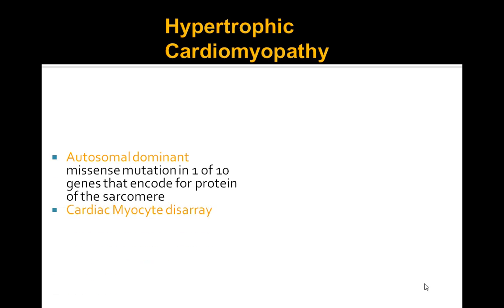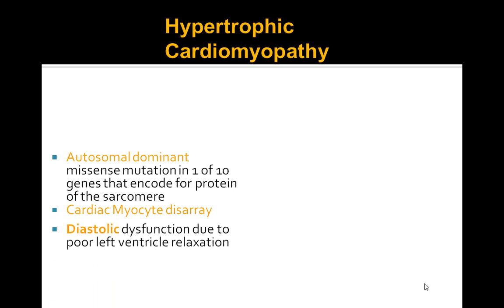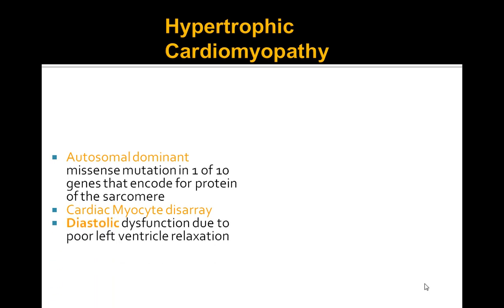Now, what about hypertrophic cardiomyopathy? This is an autosomal dominant condition due to a mutation in one of the genes, causing cardiac myocytes to be in disarray. Unlike dilated cardiomyopathy, hypertrophic cardiomyopathy is diastolic dysfunction, mainly due to poor left ventricular relaxation.